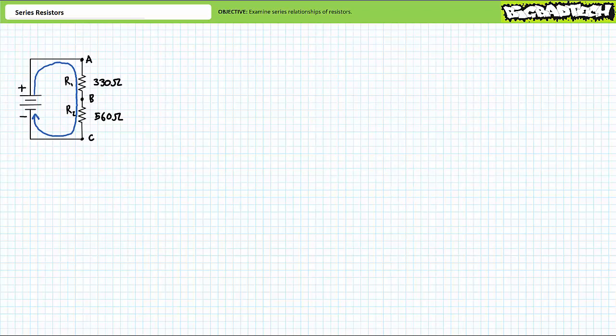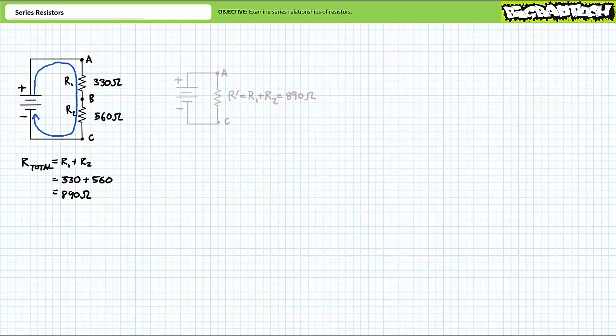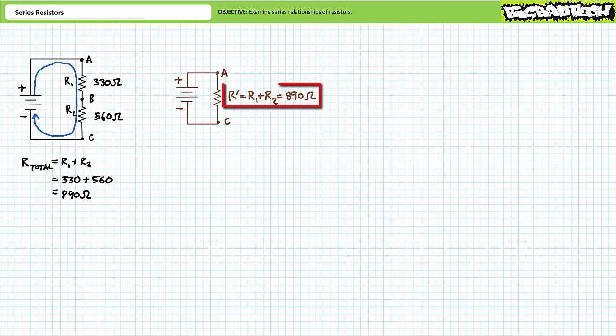For this series circuit consisting of a 330 ohm resistor in series with a 560 ohm resistor, the source sees a total resistance of 330 plus 560, or 890 ohms. This implies the source would be none the wiser if the series combination of two resistors was swapped out and a single 890 ohm resistor took their place. The shorthand for resistors in series is addition, implying a series simplification has occurred.